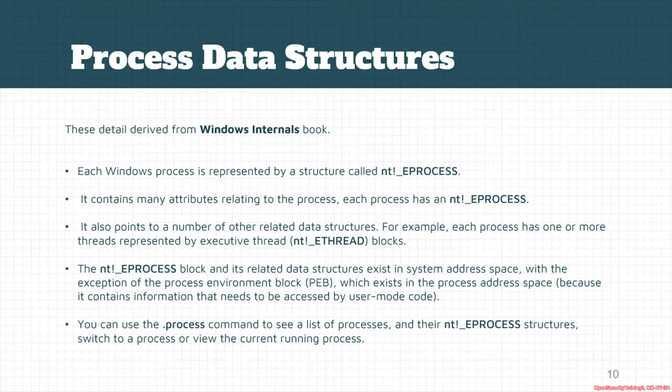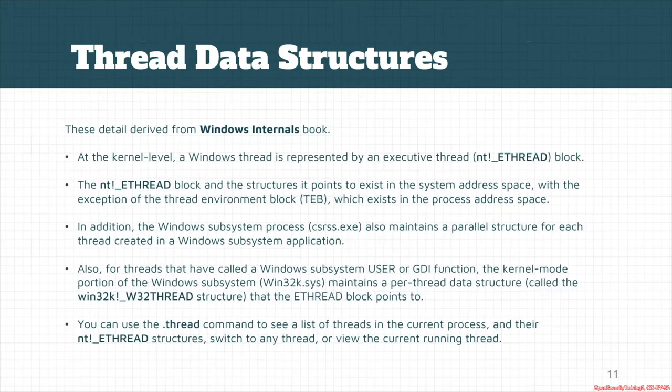There's a command in HyperDbg which is called dot process, which shows a list of processes and their NT E_PROCESS structures. You can also switch to a view or the memory layout of a specific process by using this command.